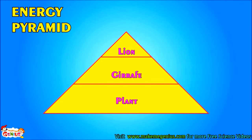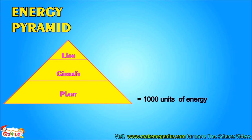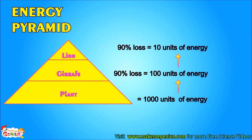Look at this pyramid — it is called an energy pyramid. It shows that energy available becomes lesser and lesser as we move up the food chain. For example, if plants absorb 1,000 units of energy from the sun, when a giraffe eats it, 90% energy is lost, so the giraffe only gets 10%, which is 100 units. When a lion eats the giraffe, 90% energy is again lost, and the lion gets only 10 units of energy.